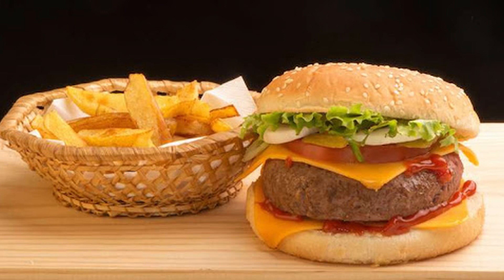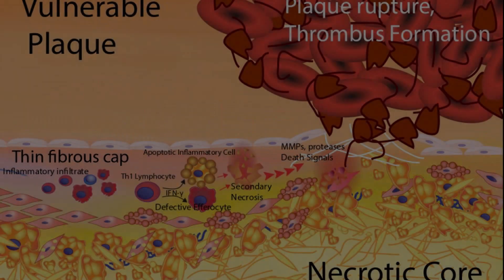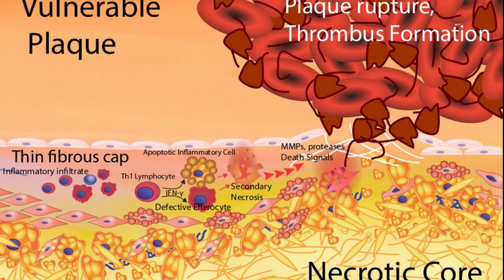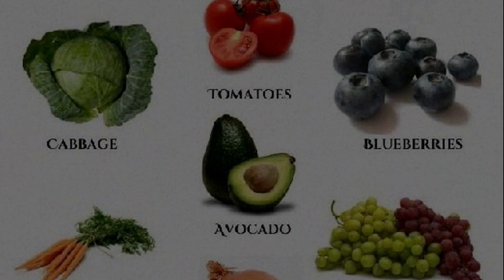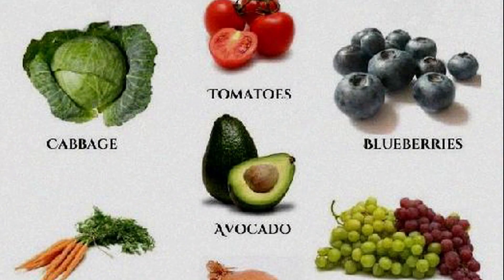Preventing oxidized cholesterol: there are things that you can do to stop the damage from oxidized LDL. Focus on eating healthy fats — monounsaturated fats are considered anti-inflammatory. Eat saturated fats in moderation. Include plenty of fresh fruits and vegetables in your diet. Pay attention to nutrition labels and stay away from hydrogenated or partially hydrogenated foods.